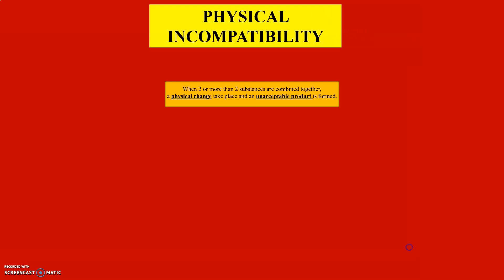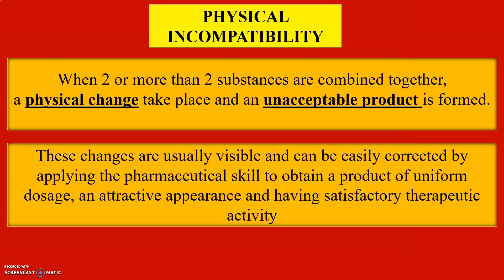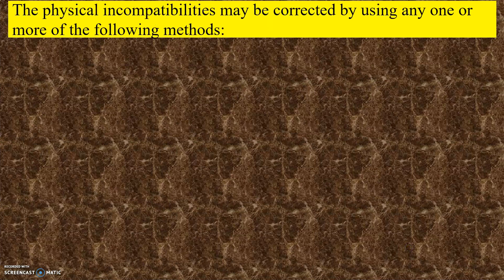Now let us see what is physical incompatibility. When two or more substances are combined together, a physical change takes place and an unacceptable product is formed. These changes are usually visible and can be easily corrected by applying pharmaceutical skill to obtain a product of uniform dosage, an attractive appearance, and having satisfactory therapeutic activity.